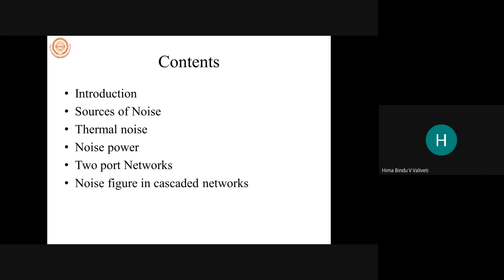Today we'll start off with: introduction, then sources of noise, arbitrary noise, different types of noise. Thermal noise is very, very important — it's an internal noise generated because of the resistors, or the resistance given by electrons in the semiconductor device when a potential is applied. Then we'll move on to noise bandwidth, noise power, and two-port networks — series and parallel.